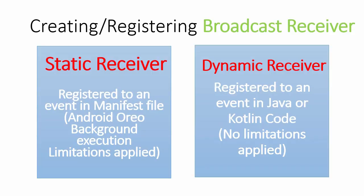To create a broadcast receiver, you can use two approaches: static and dynamic. Static receivers are mostly used when receiving something from the operating system, like enabling Bluetooth or airplane mode. Dynamic receivers are created and registered in Java code — for example, registering when an activity starts and unregistering when the activity is destroyed.